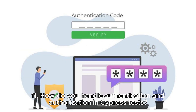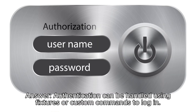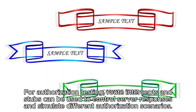Question 11: How do you handle authentication and authorization in Cypress tests? Authentication can be handled using fixtures or custom commands to log in. For authorization testing, route intercepts and stubs can be used to control server responses and simulate different authorization scenarios.